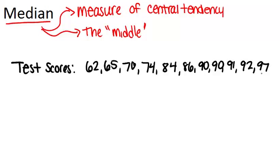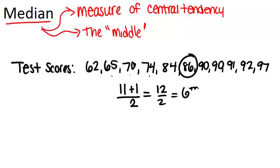The next thing that you want to do is figure out how many numbers we have. And there are 11 different numbers here. So that means the number that's exactly in the middle will be the (11+1)/2 or 6th number. So we can count over 1, 2, 3, 4, 5, 6. And that means 86 is the median.